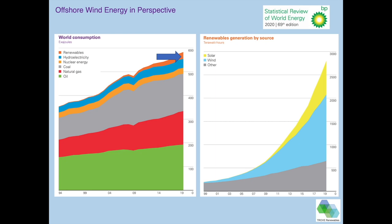The slide to the right shows that of that thin slither — the orange slither on the left-hand graph — the makeup is basically broken out as solar, wind, and other renewable energy. You can see that wind is the largest of those, but that is of course for both onshore and offshore wind on a global basis. The story we're going to see today is that offshore wind is a very new, very fast-moving and growing phenomenon.